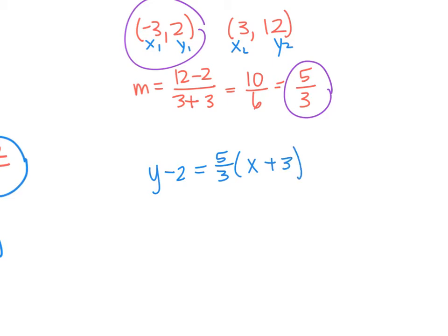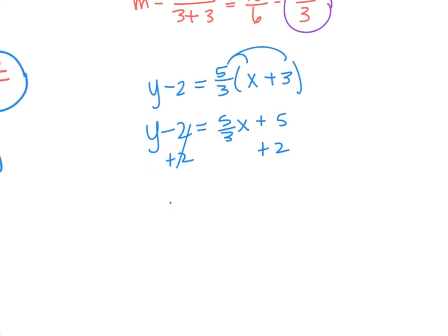Now to solve, we're going to go ahead and distribute your slope. 5/3 times x is just 5/3 x. 5/3 times 3 is just a 5. Then we're going back and solving for y. So we have y equals 5/3 x plus 7. But again, remember, we're going to switch out that y because we started in function notation, so final answer, f(x) is equal to 5/3 x plus 7. Take a look at it in questions. Thank you.